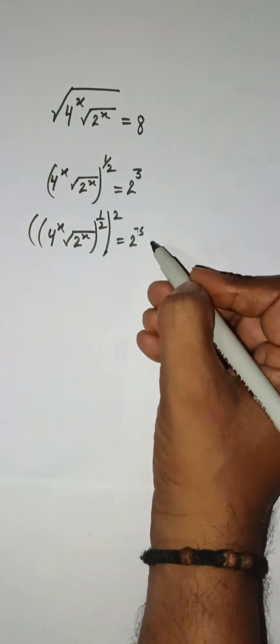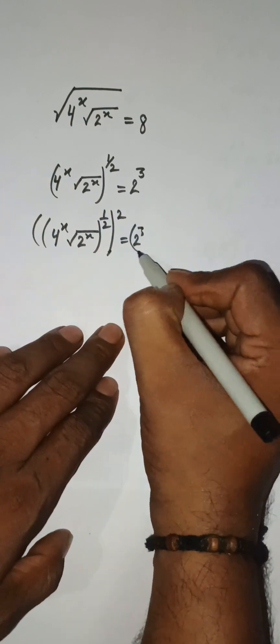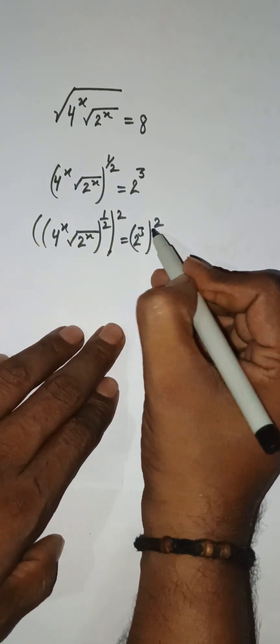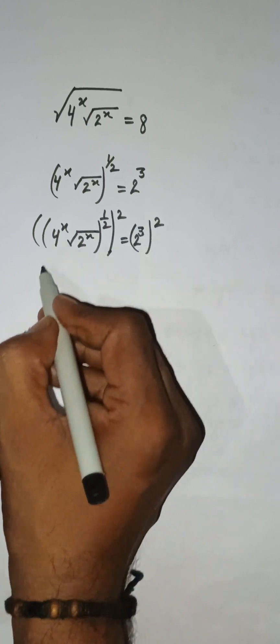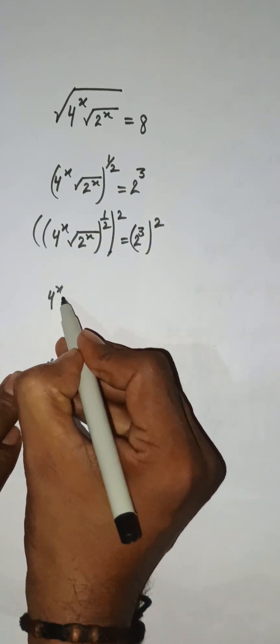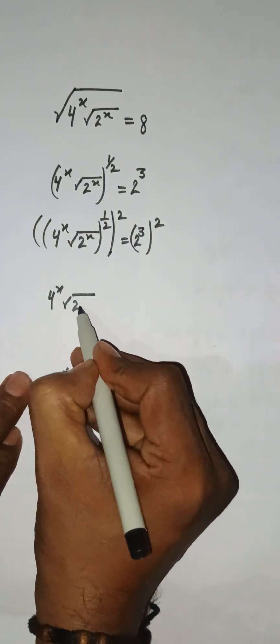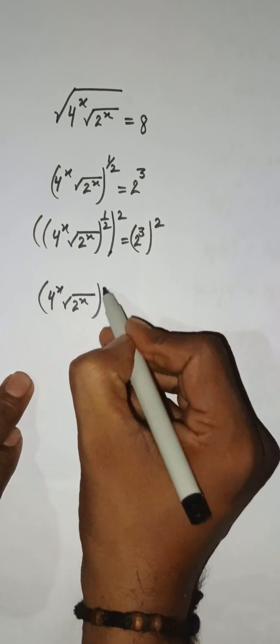So here 2 to the power 3, and I am raising power 2. You can see that we have 4 to the power x, then the square root of 2 to the power x.